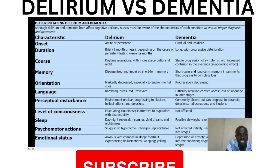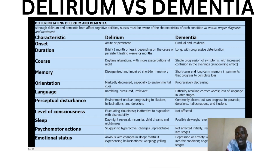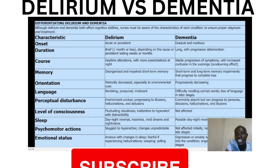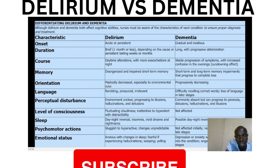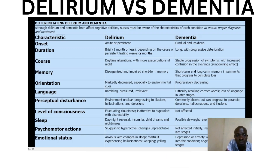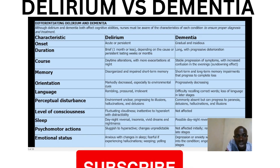In delirium, thinking is disorganized and keeps on deteriorating up to the point where someone has complete loss. In terms of orientation, delirium shows a marked decrease, especially to environmental cues. In dementia, orientation is progressively decreasing in that manner.